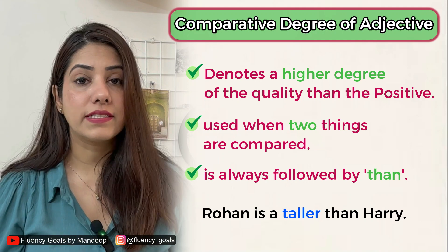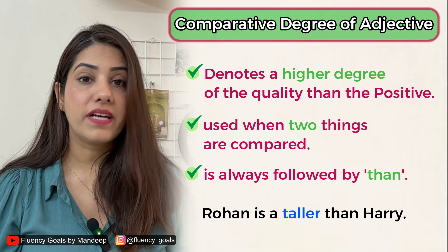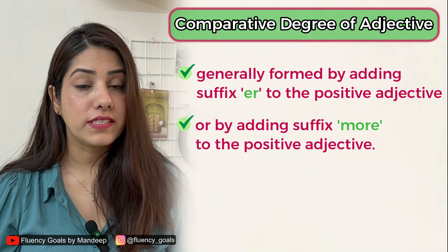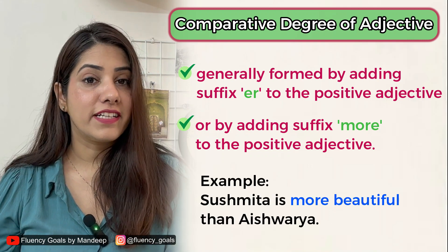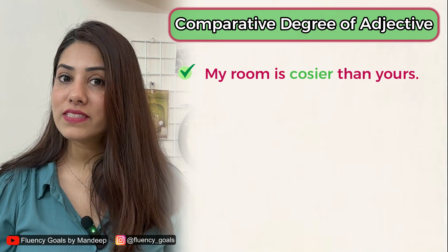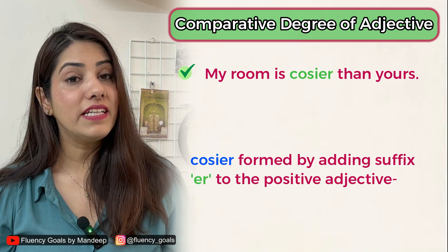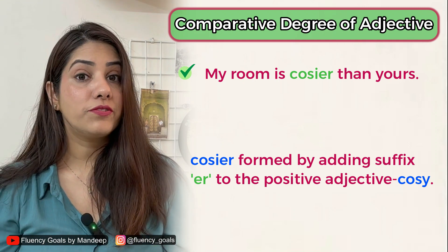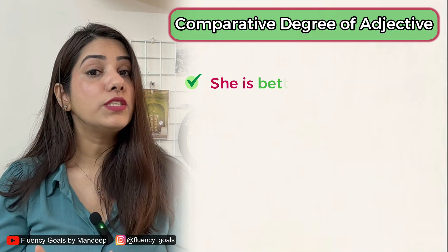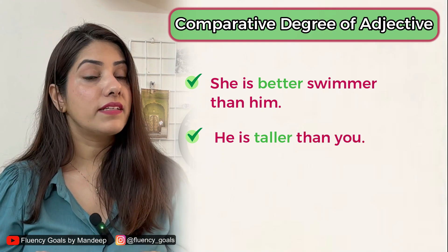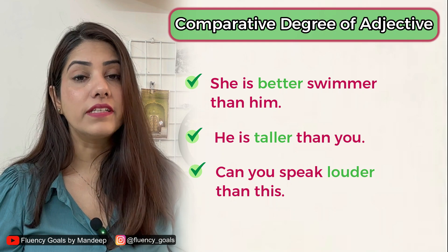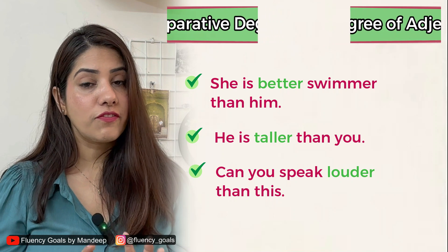Examples of comparative degree: 'Sushmita is more beautiful than Aishwarya' — 'more beautiful' is the comparative. 'My room is cozier than yours' — 'cozier' is formed by adding -er to the positive 'cozy'. 'She is a better swimmer than him.' 'He is taller than you.' 'Can you speak louder than this?' — 'louder' is a comparative adjective followed by 'than'. So an important point: comparative adjectives are usually followed by 'than'.